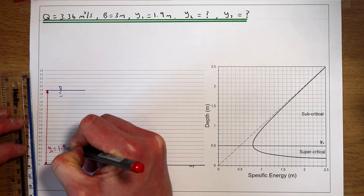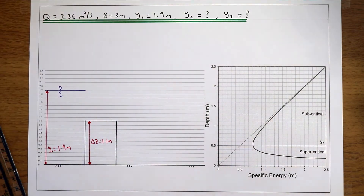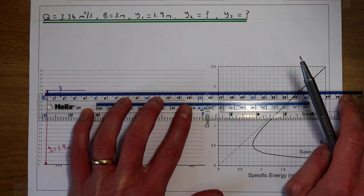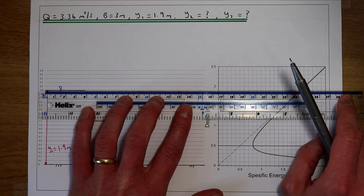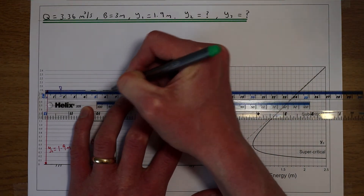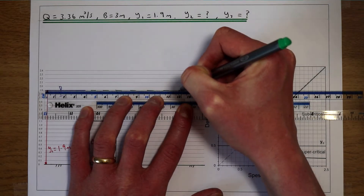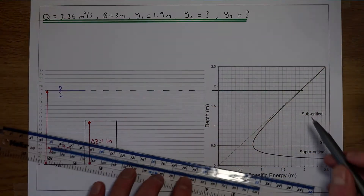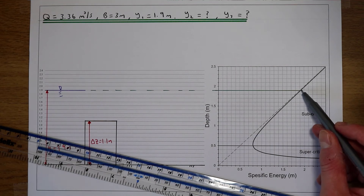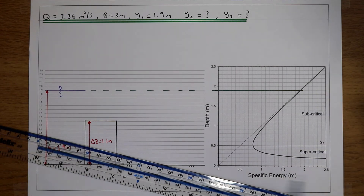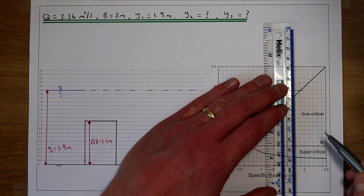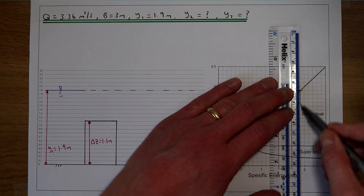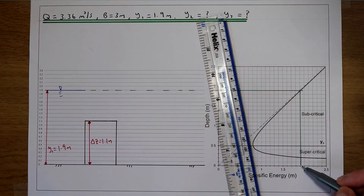So y1 is 1.9 metres. What we can do is draw a line across from that 1.9 metre flow depth and see what our initial level of specific energy is. If we draw a line across, we should see that it will intercept the y-axis of the graph at 1.9 metres. To find our specific energy we're looking for the point at which that flow depth intersects the profile, and at that point we can draw a line down and get our specific energy level — just above 1.9 metres.